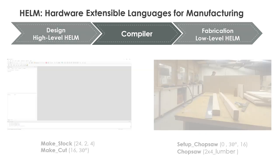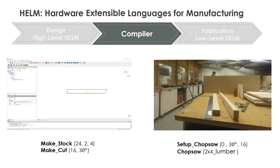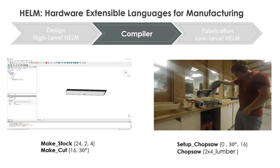Our high-level Helm is inspired by traditional CAD languages, but focuses on subtractive operations. For example, we can take a box and cut along a curve. Our low-level language is process-specific — for example, take a 2x4, set up a chop saw at a 30 degree angle, and cut. Since the language must take into account individual fabrication processes, our architecture has been designed to be extensible so that we can easily add new fabrication hardware.